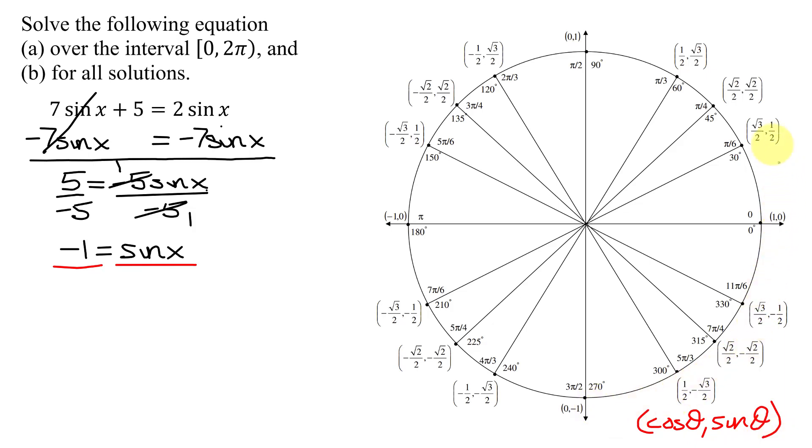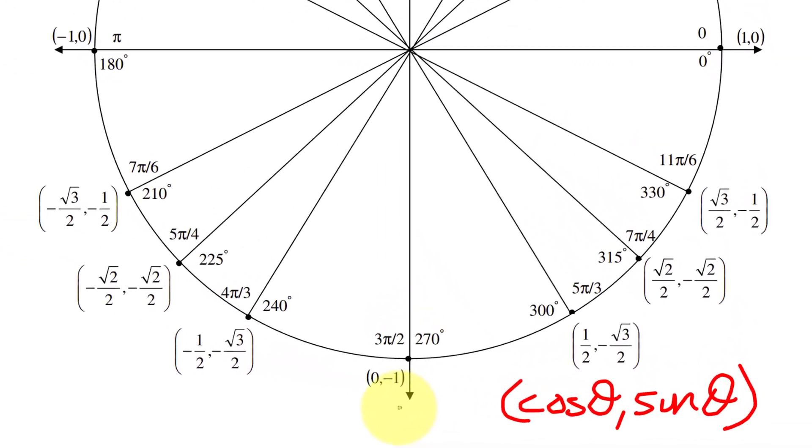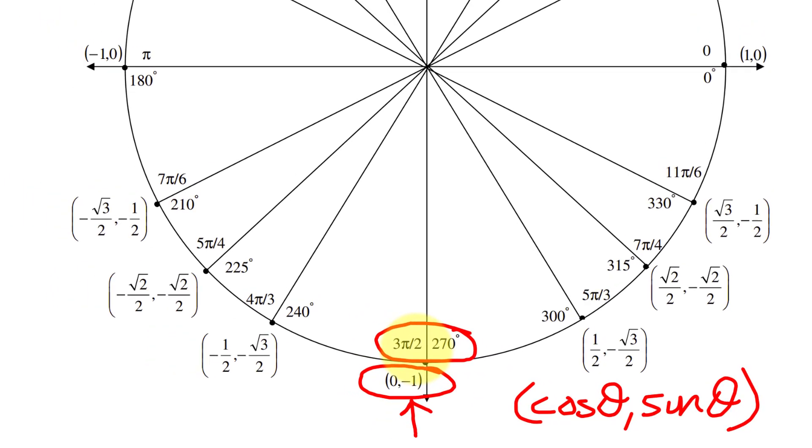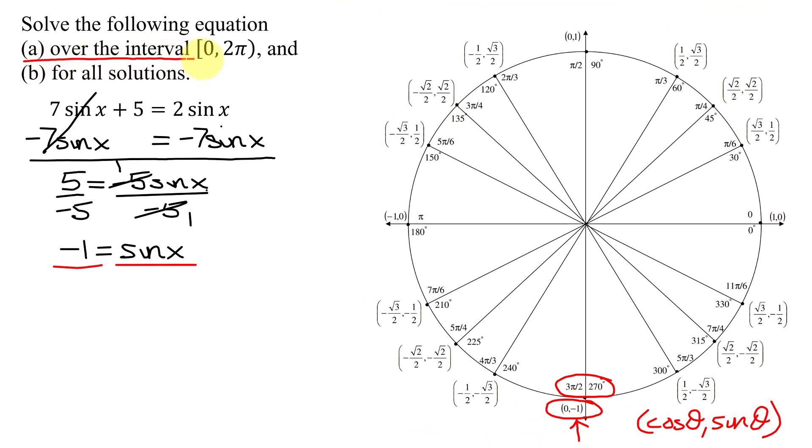Are there any points on the unit circle with a y-coordinate of negative 1? There's just one point right here that has the y-coordinate of negative 1, and that's for the angle of 3π over 2 radians.